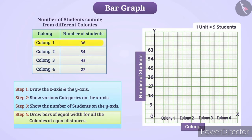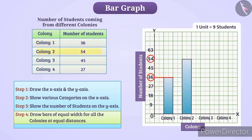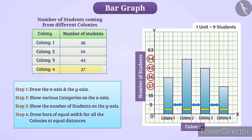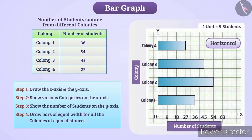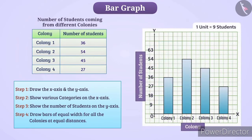The number of students from colony 1 is 36, so we will draw a bar for colony 1 with a length up to 36. We will do the same for all other colonies at equal distances. This is the vertical bar graph. We can also draw it horizontally like this. And now, we're done!